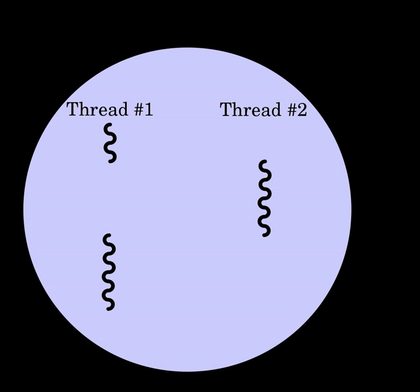Threads in the same process share the same address space. This allows concurrently running code to couple tightly and conveniently exchange data without the overhead or complexity of IPC. When shared between threads, however, even simple data structures become prone to race conditions if they require more than one CPU instruction to update. Two threads may end up attempting to update the data structure at the same time and find it unexpectedly changing underfoot. Bugs caused by race conditions can be very difficult to reproduce and isolate. To prevent this, threading application programming interfaces offer synchronization primitives such as mutexes to lock data structures against concurrent access.